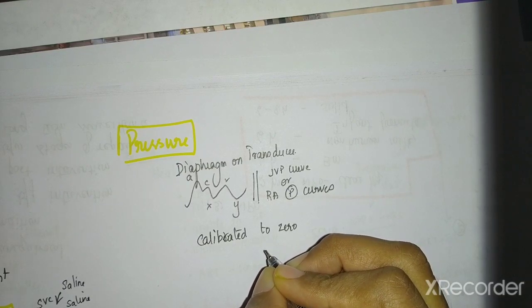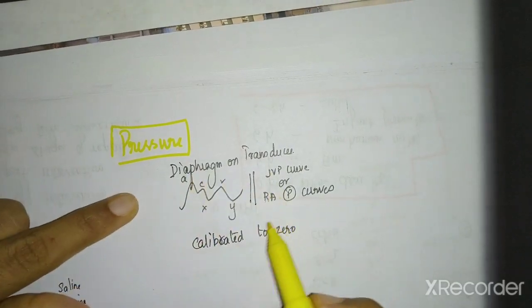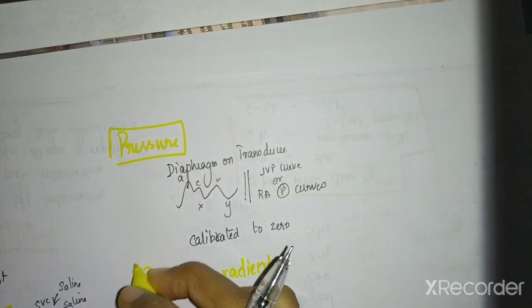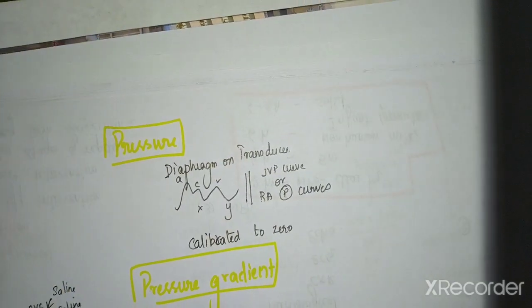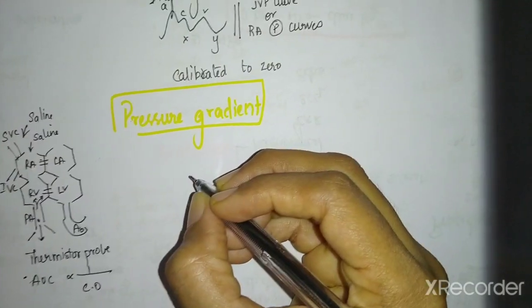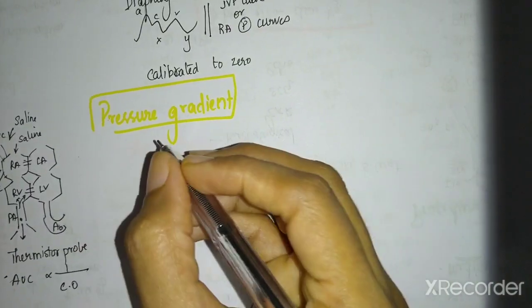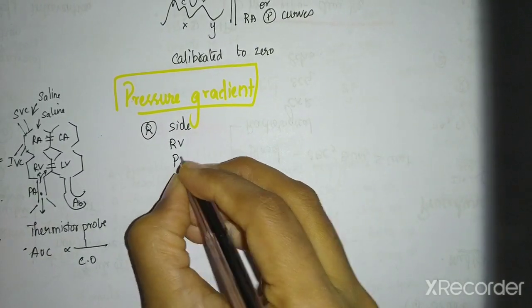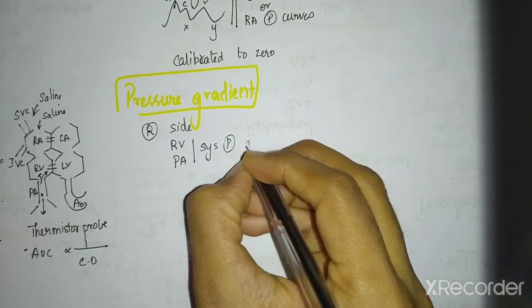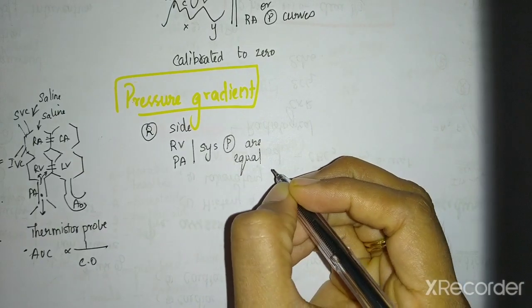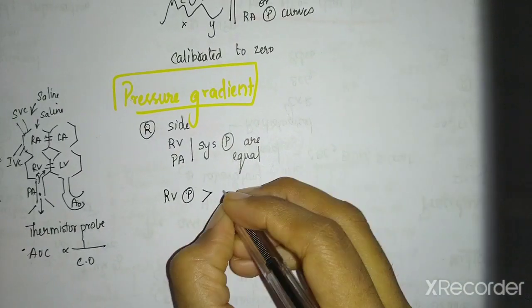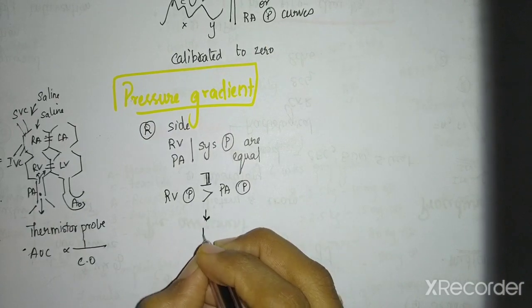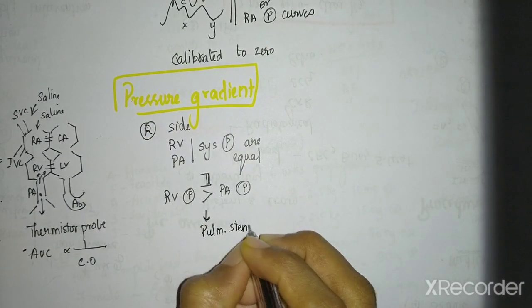Next we will talk about pressure gradients. This is just in a single chamber. What about difference? That is pressure gradient between one place to another. So in pressure gradients, it is different between right and left chambers. So on the right side, if you see, the right ventricular and pulmonary artery systolic pressures are equal. So if right ventricular pressure is more compared to that of pulmonary arterial pressure, then there is a block somewhere between the two. So what will this block be? Probably a pulmonary stenosis. So this is right side.